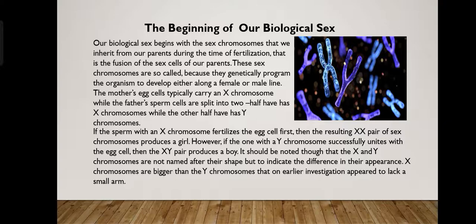The mother's egg cells carry an X chromosome. The father's sperm cells split into two halves — one half has X chromosomes and the other half has Y chromosomes. So if the sperm cell with an X chromosome fertilizes the egg cell first, the resulting XX pair produces a girl, because females have XX chromosomes. However, if the sperm with a Y chromosome fertilizes the egg first, it produces a male, because males have XY chromosomes.